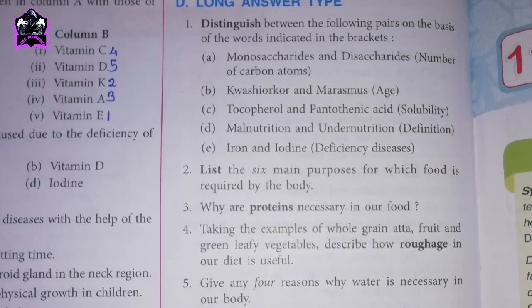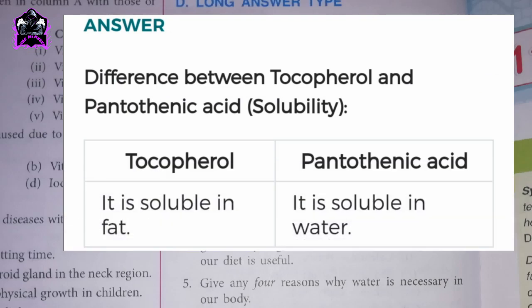C. Distinguish between tocopherol and pantothenic acid by solubility. Tocopherol is soluble in fat. Pantothenic acid is soluble in water.